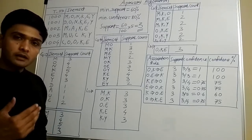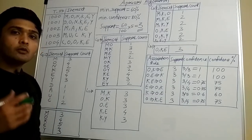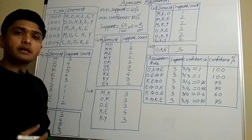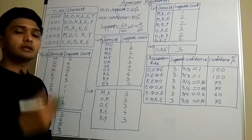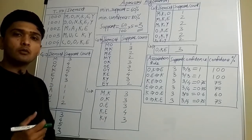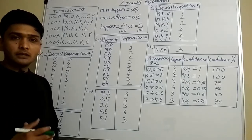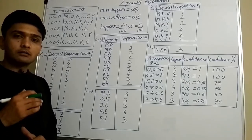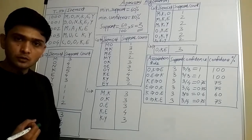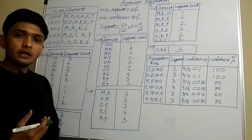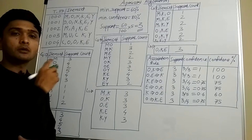Where are these association rules used? The best example is Amazon. When we go to Amazon for shopping and we purchase something, you might have seen messages like 'the person who bought this item has also got this item.' For example, the person who bought a pen has also got pencils. These kind of messages are possible because of association rules.